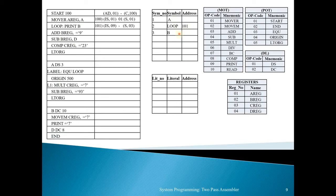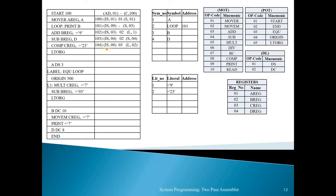The next statement is 'ADD BREG, =9'. LC is 102. ADD is at position 03 in the MOT, BREG is the second register position, and '=9' is a literal entered into the literal table at position 1. Intermediate code: 102 (IS, 03) (02) (L, 01). Next is 'SUB BREG, D' at LC 103 — SUB is at position 04, BREG at 02, D entered into symbol table at position 04. Next is 'COMP CREG, =23' at LC 104 — COMP at position 08, CREG at position 03, literal =23 entered into literal table at position 02.